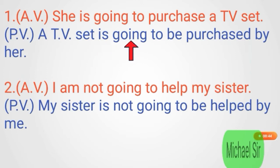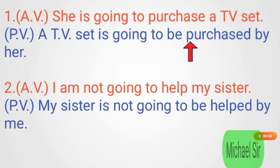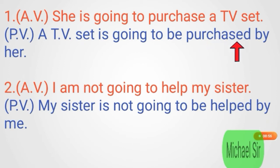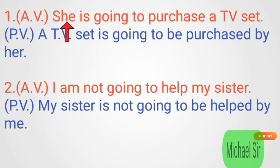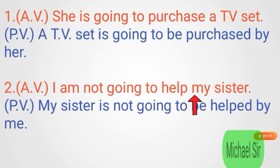After 'going to' we write 'be', and after 'be' we write the third form of verb 'purchase', which is 'purchased'. Then the object with preposition 'by' — 'she' becomes 'her'. So the passive voice is: 'A TV set is going to be purchased by her.' Next example — Active voice: 'I am not going to help my sister.'